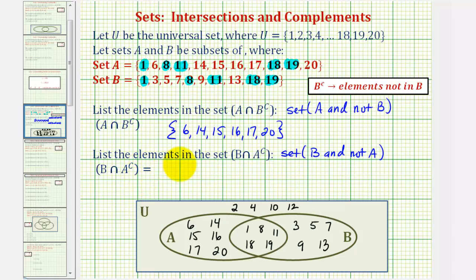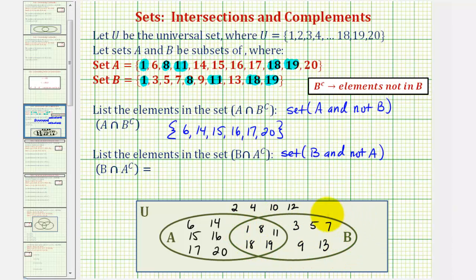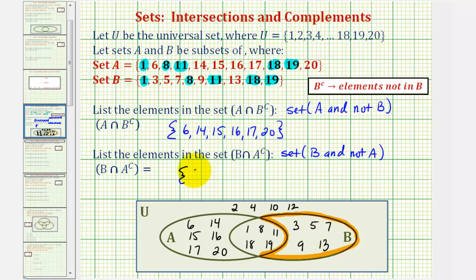Next, we want to find the elements in B and not in A. We know all of these elements here are in B, but the elements in the intersection of A and B are in A, so the elements that are in B and not in A would be these elements here: three, five, seven, nine, thirteen.